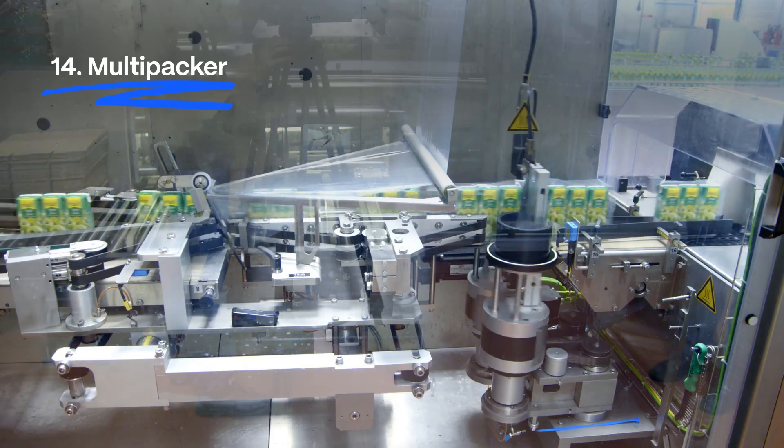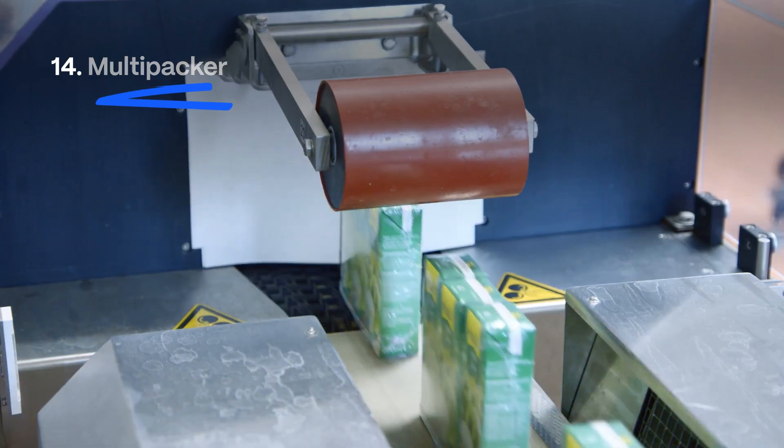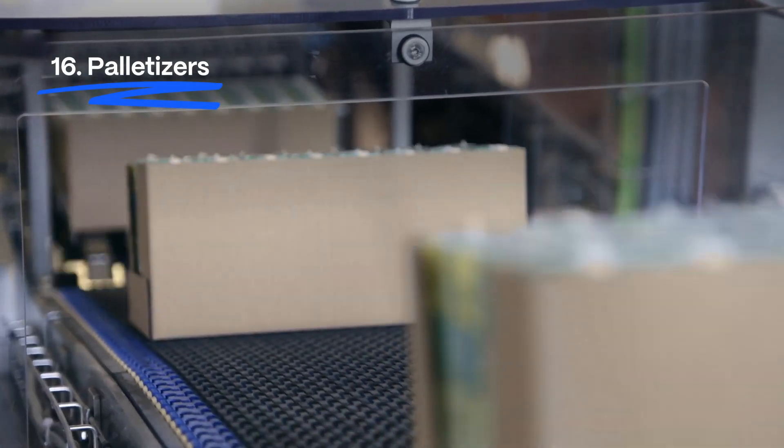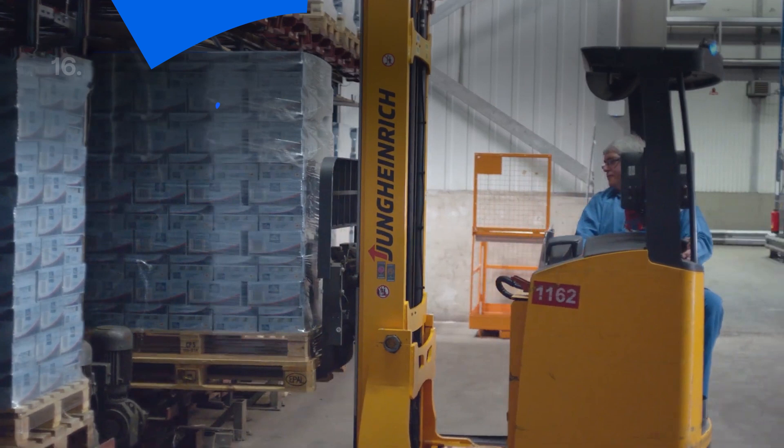Finally, multi-packers wrap the cartons together in bundles with shrink film before they're moved onto tray packers and palletizers, making them ready for distribution to retailers and consumers.